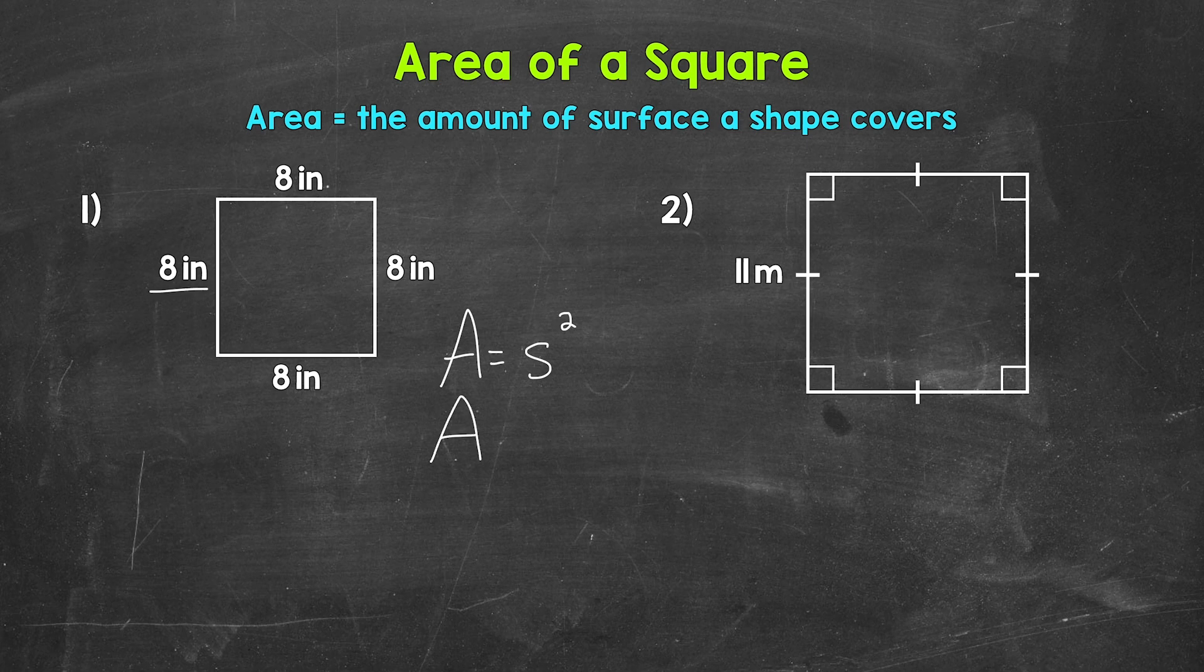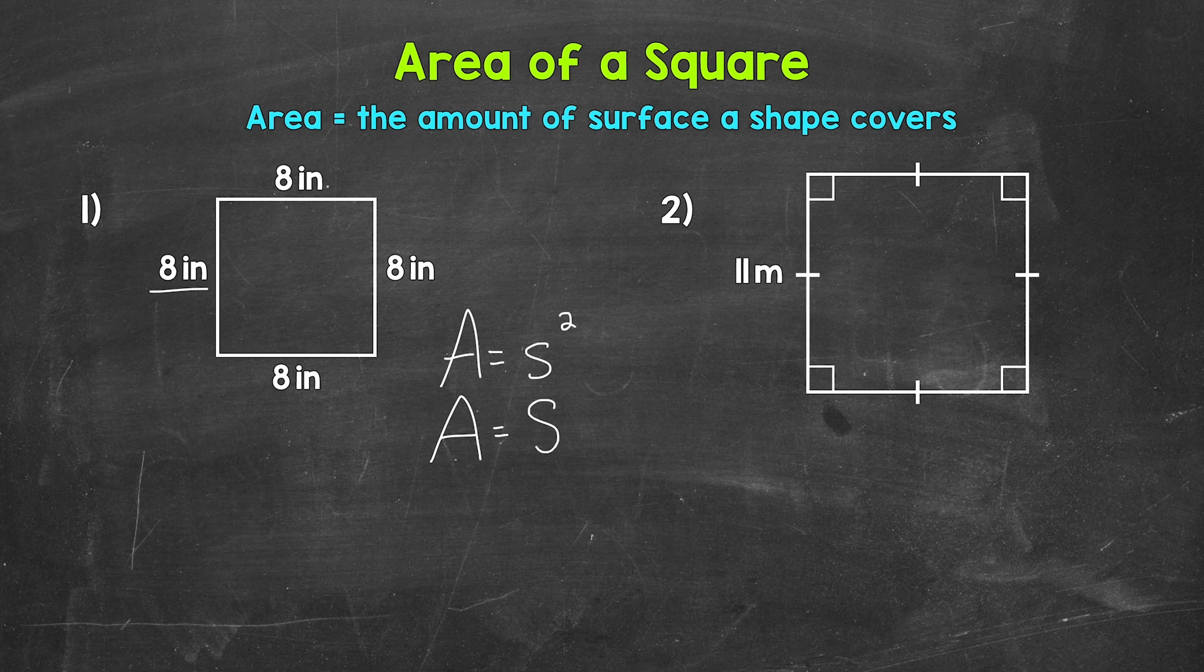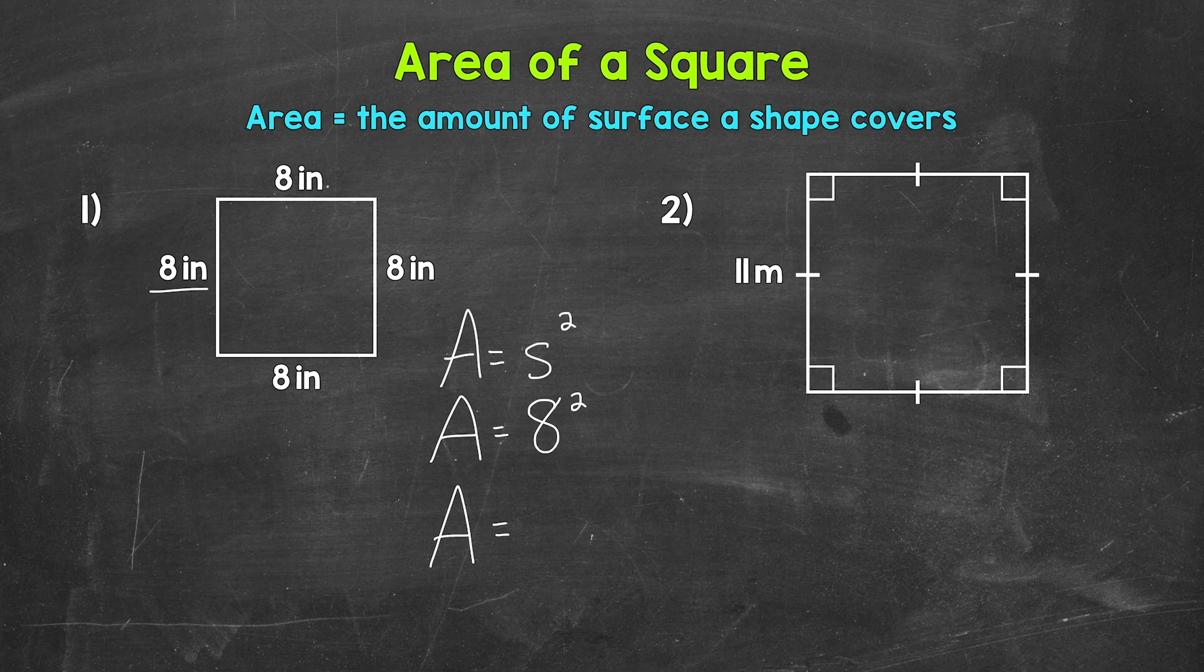So let's plug in 8 inches here for our side length. So 8 squared. 8 squared means 8 times 8 which gives us an area of 64 square inches.